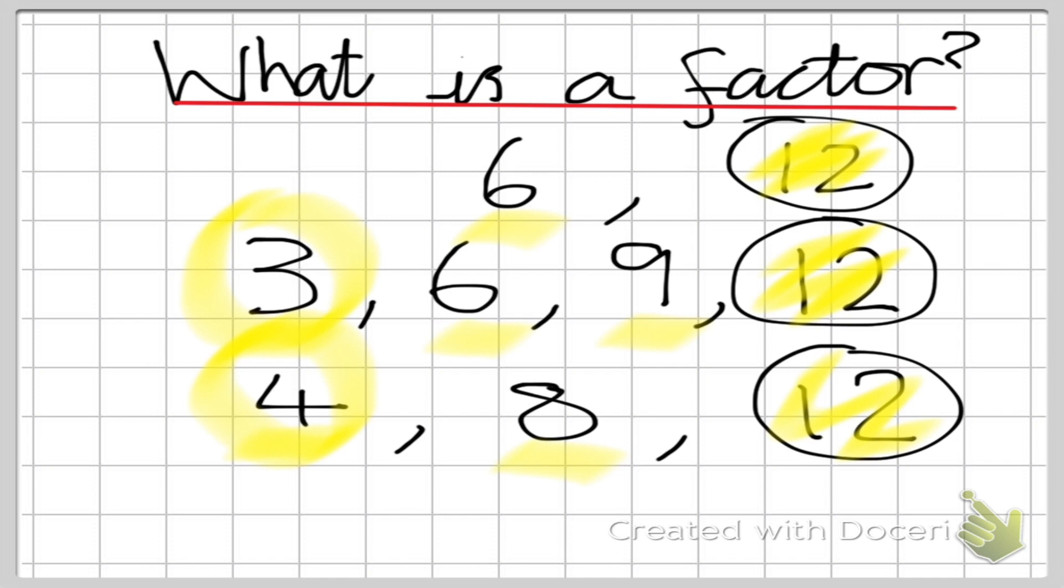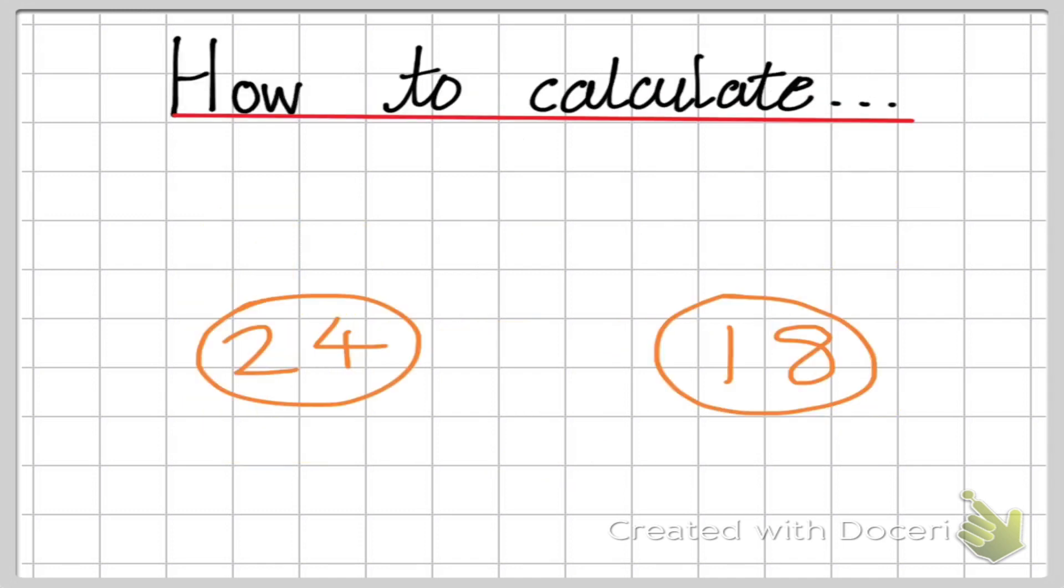So factors are always lower than the number that they are going into. So if you want to calculate the greatest common factor between two numbers, like I have here, I have the number 24 and the number 18. The first skill that you need is you either need to know all of your times tables or you need to have a multiplication grid next to you. Because what I'm going to do is I'm going to look at the number 24.